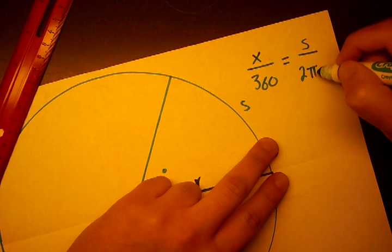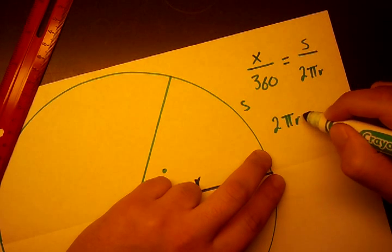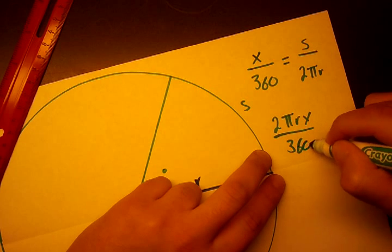So, we're going to move the 2πr to this side. So, we're going to have 2πr times x over 360 equals s. We're going to do some division. So, we have πx over 180 times the quantity r equals s.